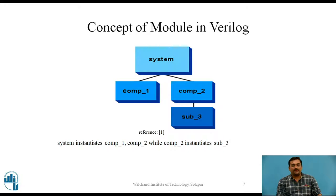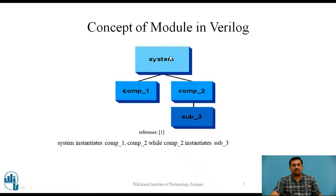The previous figure can be represented using this diagram. System is the top level or parent module, which has two child modules called comp_one and comp_two. Sub_three is the child module of comp_two. When defining the system module, it contains instances of comp_one and comp_two, while comp_two instantiates the sub_three module.